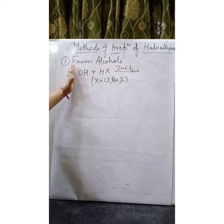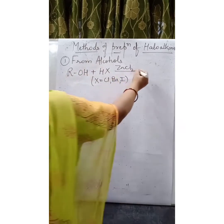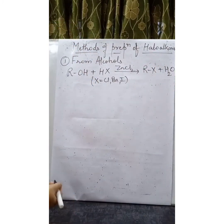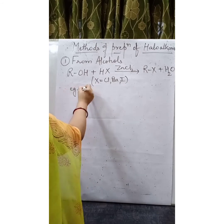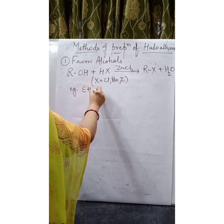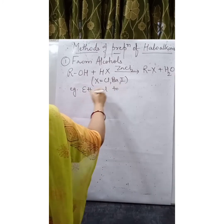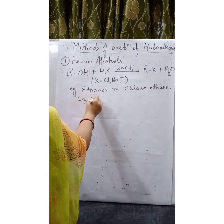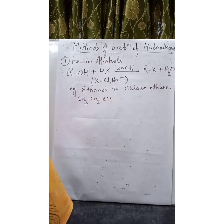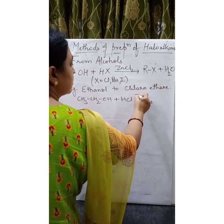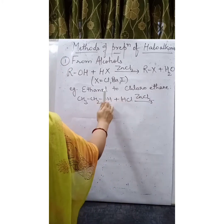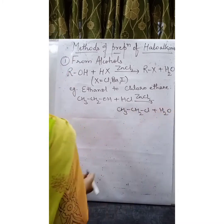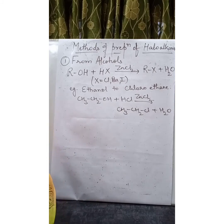The bond breaks, and the OH group gets substituted by halogen to give RX plus H2O. For example, we can prepare ethyl chloride from ethanol. CH3CH2OH is the formula of ethanol. When treated with HCl in presence of ZnCl2 as a catalyst, the bond breaks and chlorine substitutes OH to give CH3CH2Cl and water is liberated. This is how we apply the concept for conversion purposes.